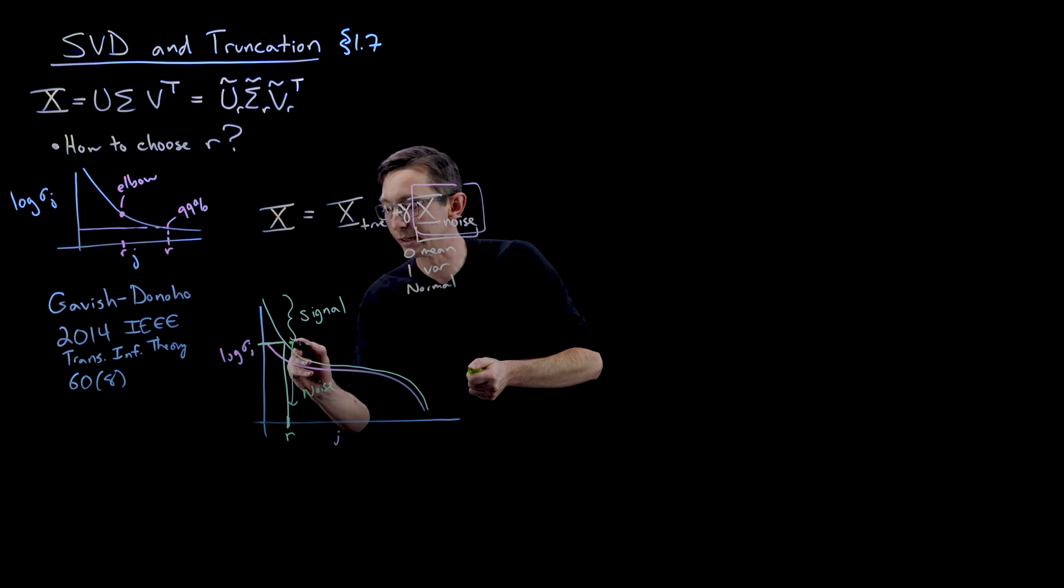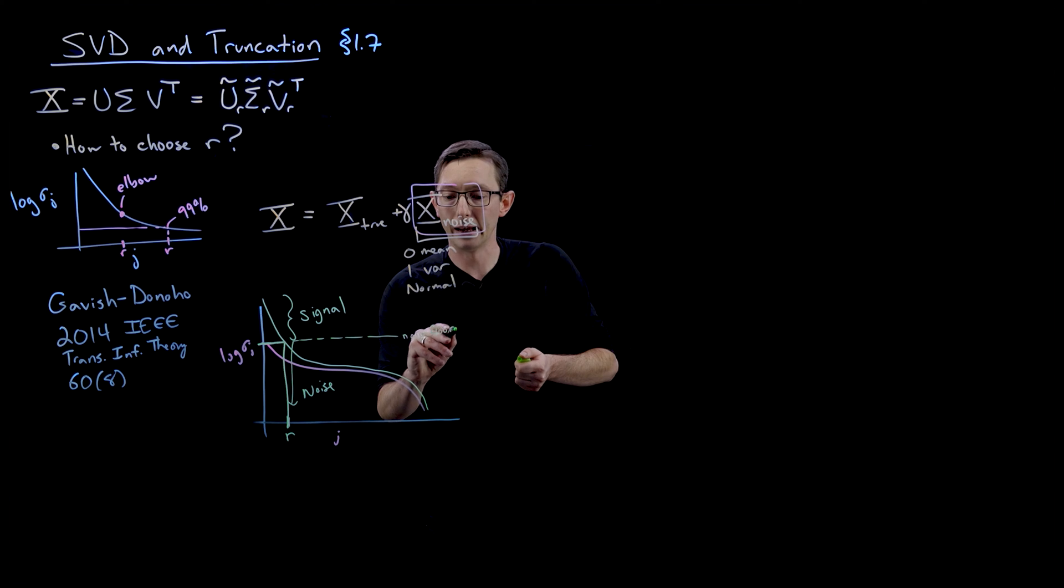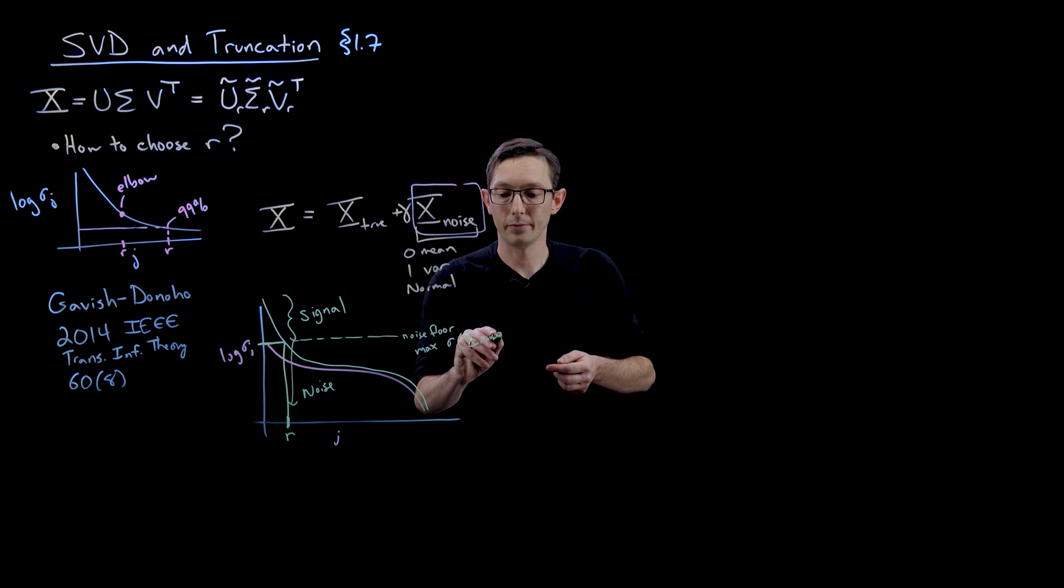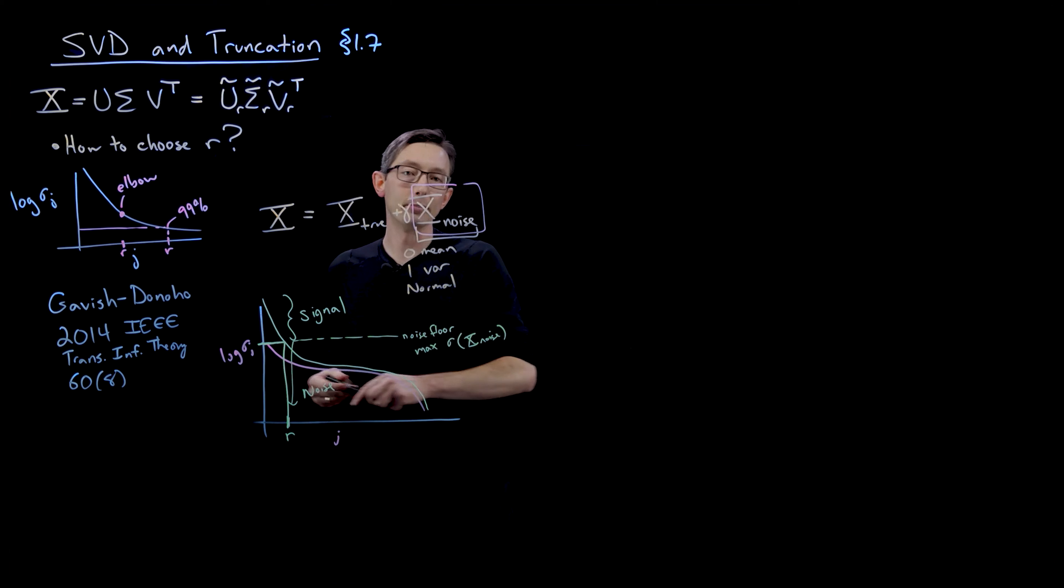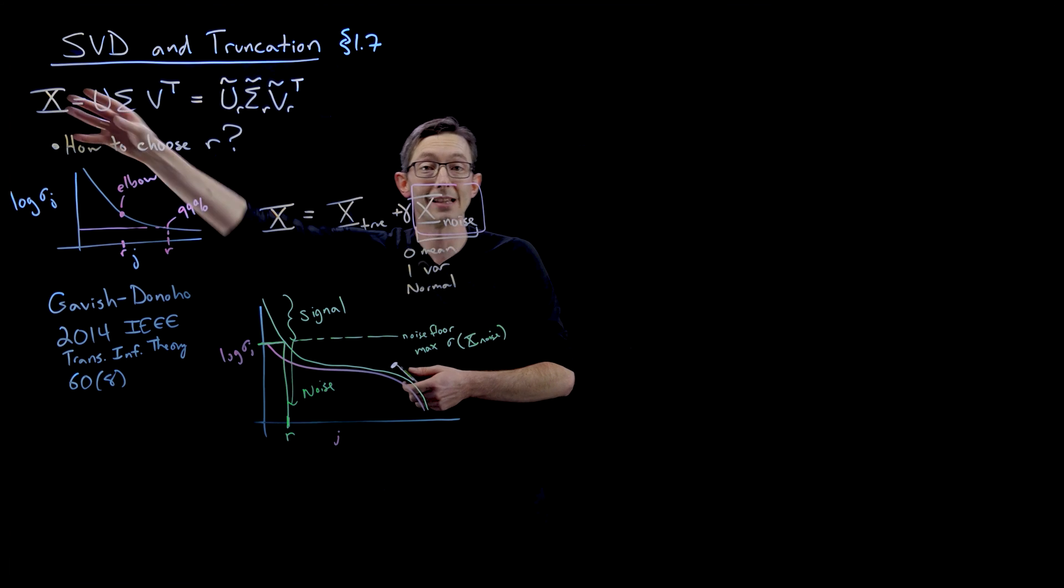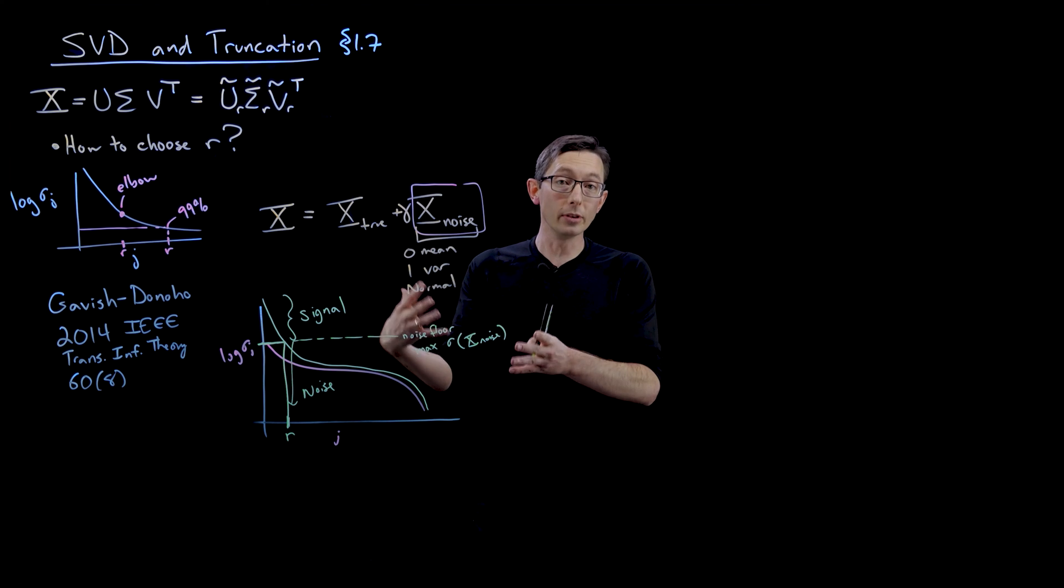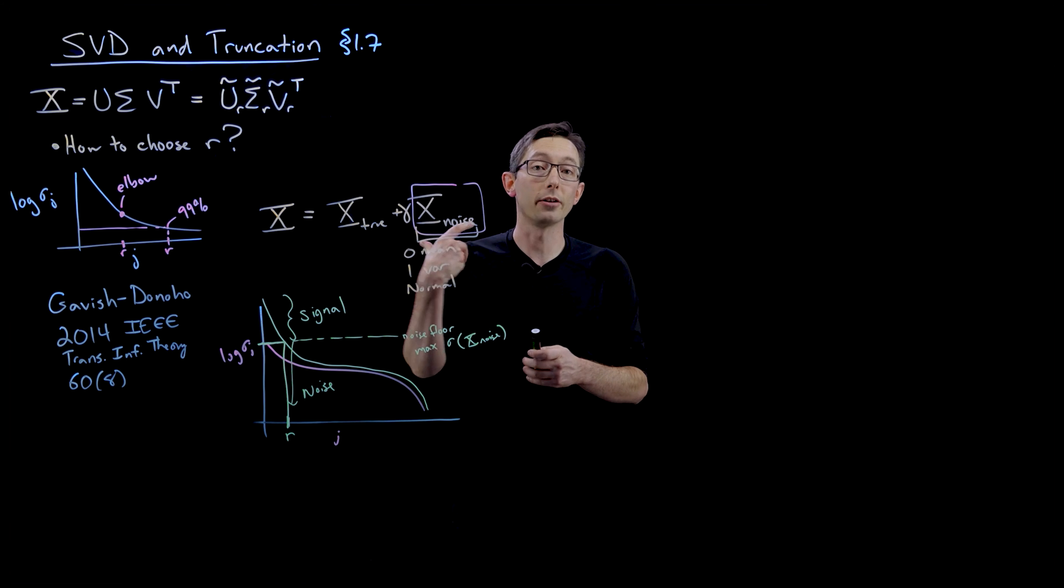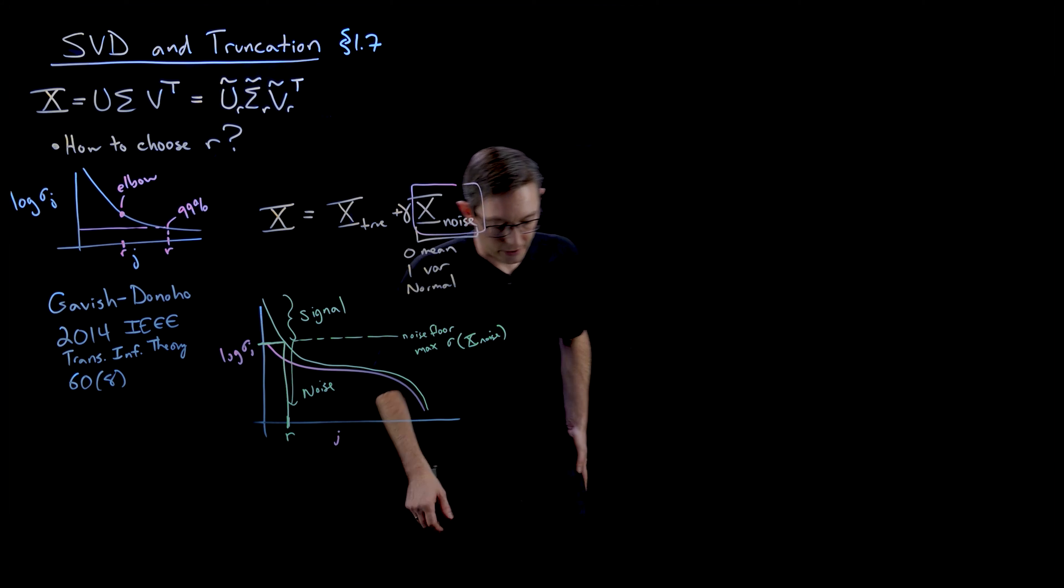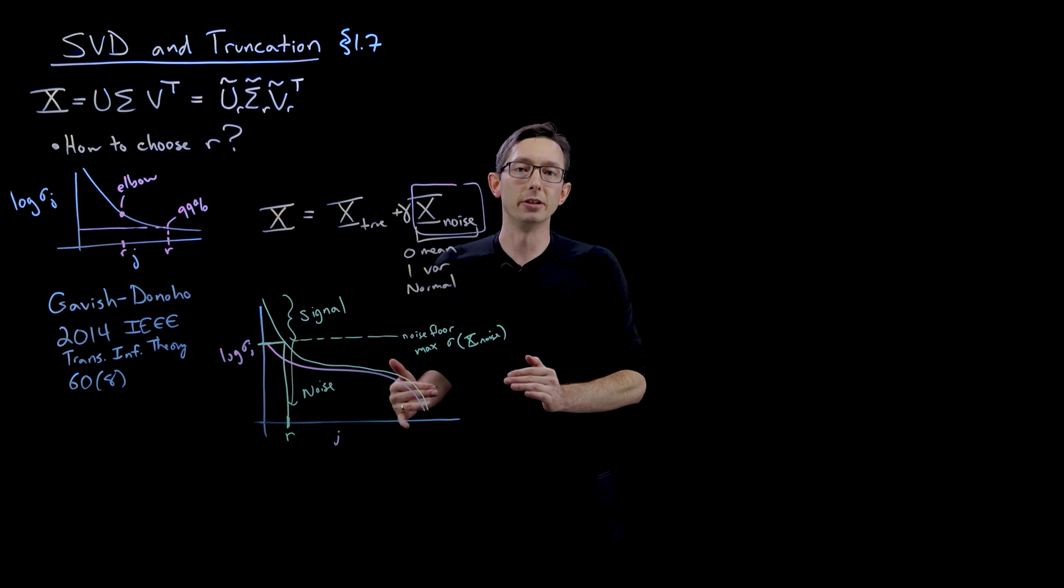So it's a very intuitive common sense thing to do. You define a noise floor given by the max sigma of your noise matrix. And you only keep the terms in your SVD of your corrupted noisy measurement matrix X that are above that noise floor. So that determines the rank R. It's only the singular values that are larger than some hard threshold value above this noise floor. Pretty cool.